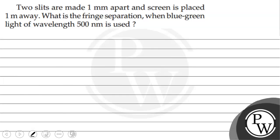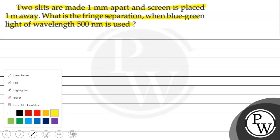Hello, let's read the question. The question says that two slits are made 1 mm apart and a screen is placed 1 meter away. What is the fringe separation when blue-green light of wavelength 500 nanometer is used? We will solve this question.